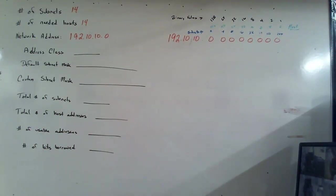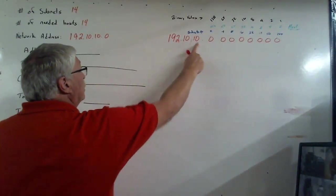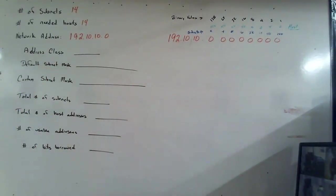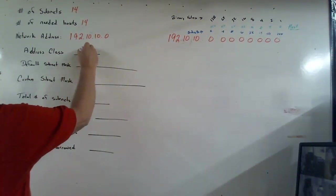So here is our first one. We have a 192.10.10.0 address, and we need 14 subnets, and in each subnet, we need at least 14 hosts. We're going to solve this as we've always done. We're going to take our address. We know that the first three positions we cannot play with. Why? Because this is a class C address.